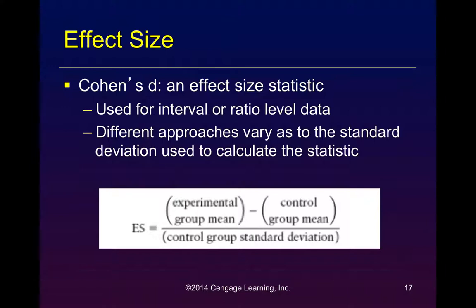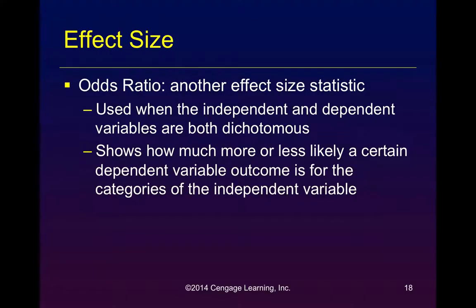An odds ratio is used to calculate the effect size when one is dealing with two variables that are dichotomous. For example, if you had one variable — say, whether they went to alcohol treatment, which is dichotomous: yes and no — and a second dichotomous variable — did they quit drinking, yes or no — you would calculate an odds ratio to determine whether or not attending alcohol treatment would result in quitting drinking.